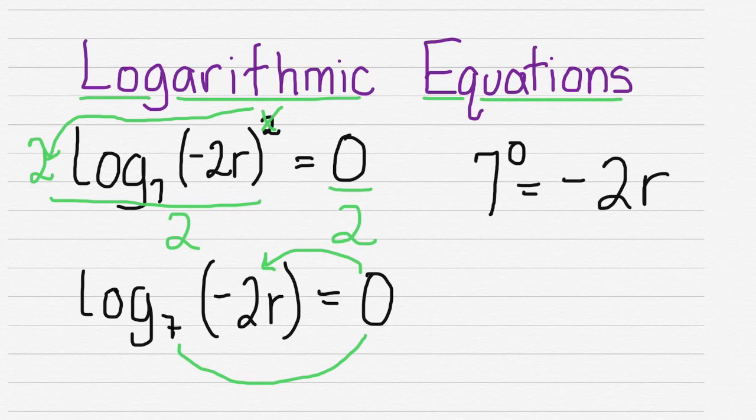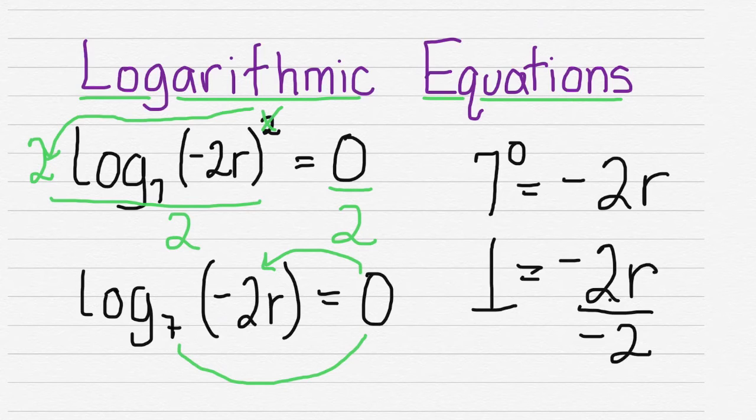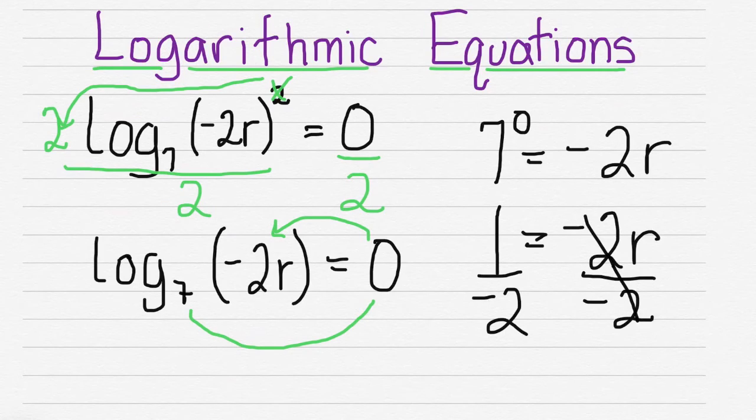We know anything that goes to the power of 0 equals 1. We're going to set that equal to our 2r. Divide both sides by negative 2. This cancels. So we have negative 1/2 is equal to r.